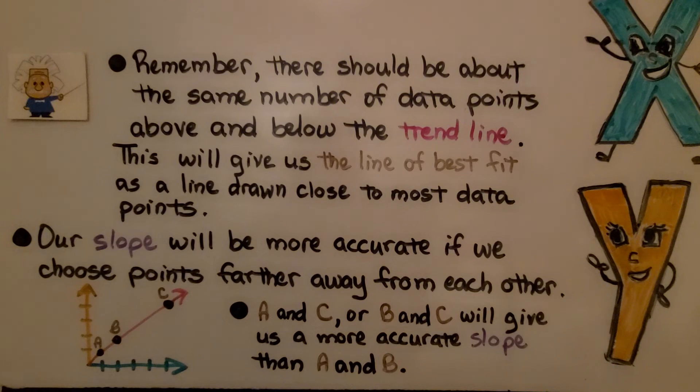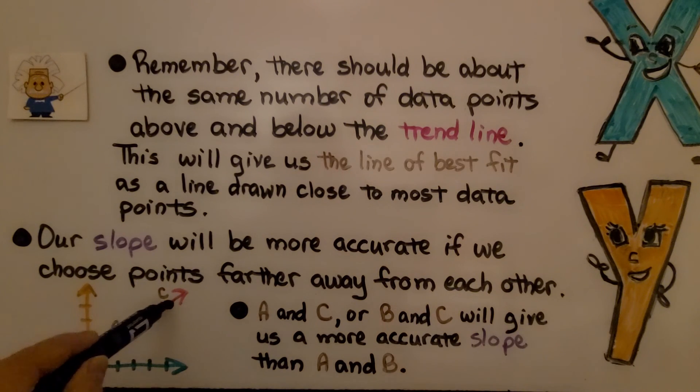Remember, there should be about the same number of data points above and below the trendline. This will give us the line of best fit as a line drawn close to most data points. Our slope will be more accurate if we choose points farther away from each other. Here we have points A, B, and C that are on this trendline, and A and C or B and C will give us a more accurate slope than if we used A and B, which are close together.